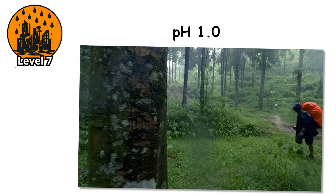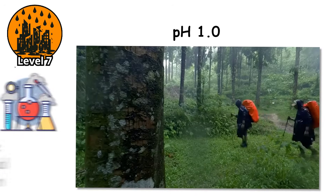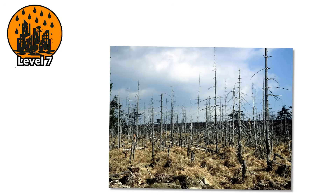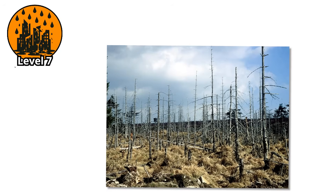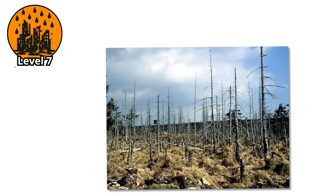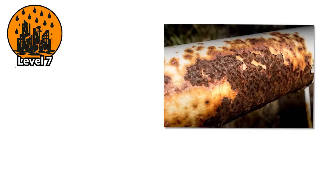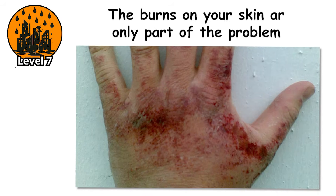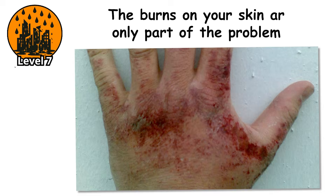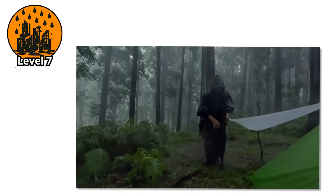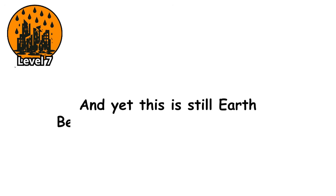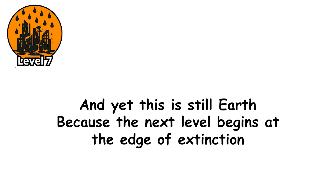At pH 1.0, you are not standing in precipitation — you are standing in a dilute chemical weapon. The damage is immediate. Metal corrodes on contact, paint bubbles, rubber weakens. And if you are caught outside with no protection, the burns on your skin are only part of the problem. What you breathe in will stay with you long after the clouds clear. And yet this is still Earth, because the next level begins at the edge of extinction.